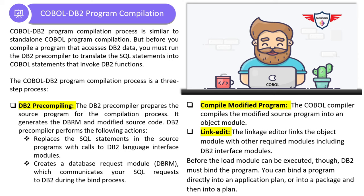Now let's move on to the COBOL DB2 program compilation process. The process of compiling a COBOL DB2 program is similar to a standalone COBOL program, but before you compile a program that accesses DB2 data, you must run the DB2 pre-compiler to translate the SQL statements into COBOL statements that can invoke DB2 functions. The reason is that the COBOL compiler — and in fact most programming language compilers — cannot recognize SQL statements, so a special mechanism is needed.